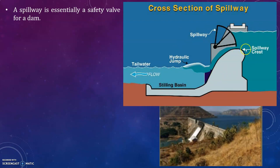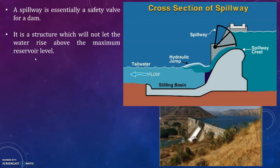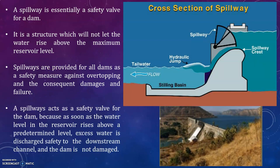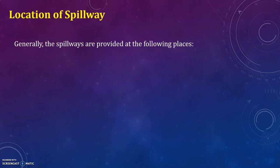This is a cross section of the spillway — showing the spillway crest, hydraulic jump, tail water, floodwater, and stilling basin. The spillway is a structure which will not let the water rise above the maximum reservoir level. Spillways are provided for all dams as a safety measure against overtopping and the consequent damages and failure. A spillway acts as a safety wall for the dam, because as soon as the water level in the reservoir rises above a predetermined level, excess water is discharged safely to the downstream channel and the dam is not damaged.